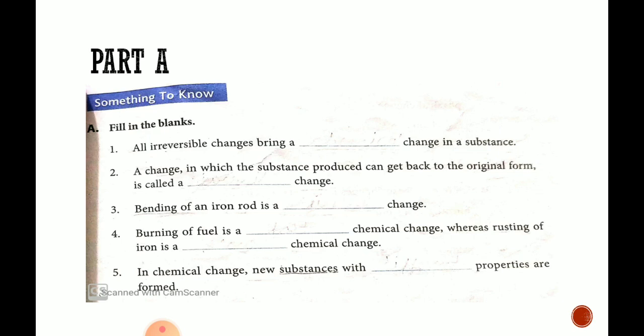Then in chemical change, new substances with different properties are formed. New substances jo bhi naya substance banega uski properties bhi different hongi. You can write different properties are formed. Then we are coming to Part B.